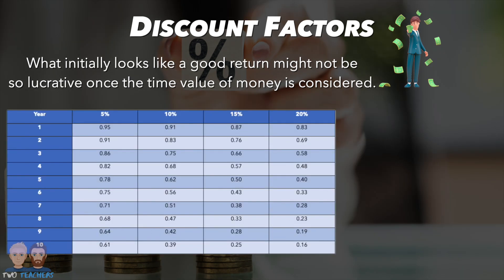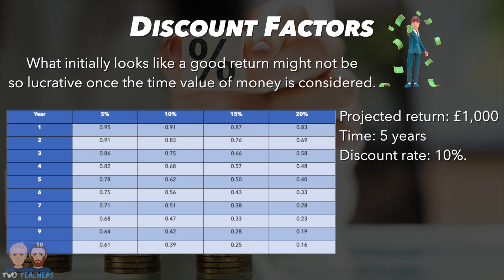This is where discount factors come into play. By using a discount table, a business is able to identify what discount factor a future cash flow must be multiplied by to calculate its present value. For example, if a potential investment was predicted to provide a return of £1,000 in five years' time and the discount rate was 10%, the business could use the discount table to identify that this £1,000 return would need to be multiplied by 0.62. That gives £1,000 × 0.62 = £620, meaning the £1,000 return in five years is actually worth just £620 in today's money.